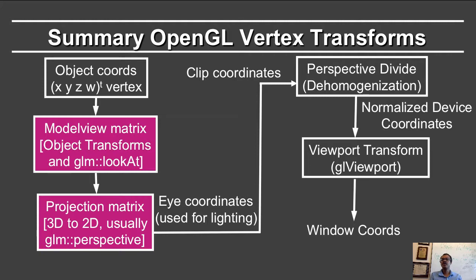Thereafter, you apply the projection matrix, which goes from 3D to 2D, and this corresponds to GLM perspective. The eye coordinates are obtained after the model view transformation — actually before the projection transformation — and those correspond to the coordinates in the 3D world for lighting. But after you have the projection transformation, what you get are clip coordinates. Here, everything is in the range of minus one to plus one. We are mapping the world essentially into a cube of two units from minus one to plus one.